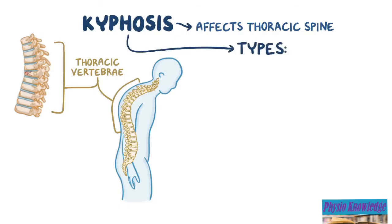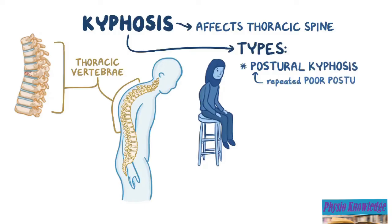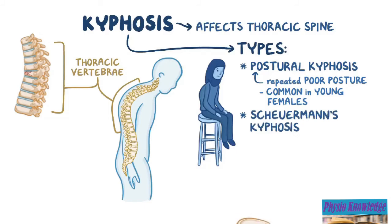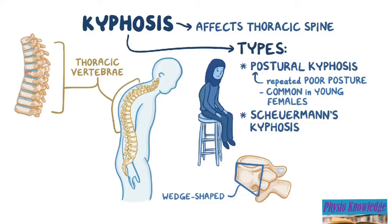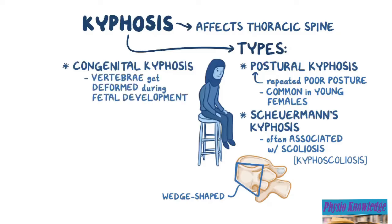There are a few types of kyphosis. First, there's postural kyphosis, which arises from repeated poor posture, like slouching for a long time. Postural kyphosis is most common in young females. Second, there's Scheuermann's kyphosis, which is when the vertebrae get structurally deformed and become wedge-shaped for an unclear reason. This is often associated with scoliosis, and it's referred to as kyphoscoliosis. Lastly, there's congenital kyphosis, which develops when the vertebrae get deformed during fetal development, resulting in a baby that's born with kyphosis.